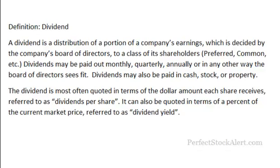Today we're going to be looking at the definition of a dividend. A dividend is a distribution of a portion of a company's earnings which is decided by the company's board of directors to a class of its shareholders — preferred, common, etc. Dividends can be paid out monthly, quarterly, annually, or in any other way the board of directors sees fit.